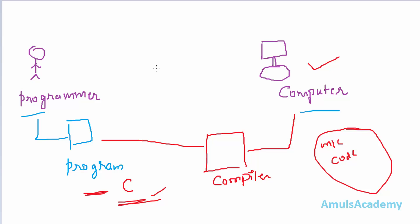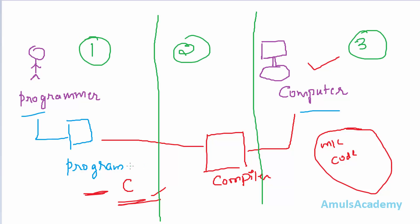Now we can divide the whole process into three parts: first is writing the program, second is compiling the program, and third is executing the program. Our main goal is to learn how to write programs and learn the basic concepts of C programming language, but we should also have some knowledge about compilation and execution. Every programming language has its own rules, and C is called a structured language — it has a specific structure for writing programs. Today we will discuss the basic structure of C programming language.